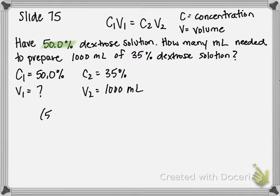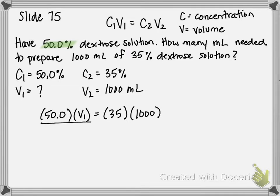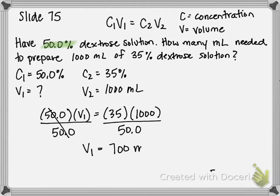Now I can plug these values into my equation: 50% for my first concentration times V1 is equal to 35 times 1,000. I want to divide both sides by 50 to get V1 by itself. Taking 35 times 1,000 divided by 50, I get that the volume of 50% dextrose solution I need to use is 700 milliliters. And that is your final answer.